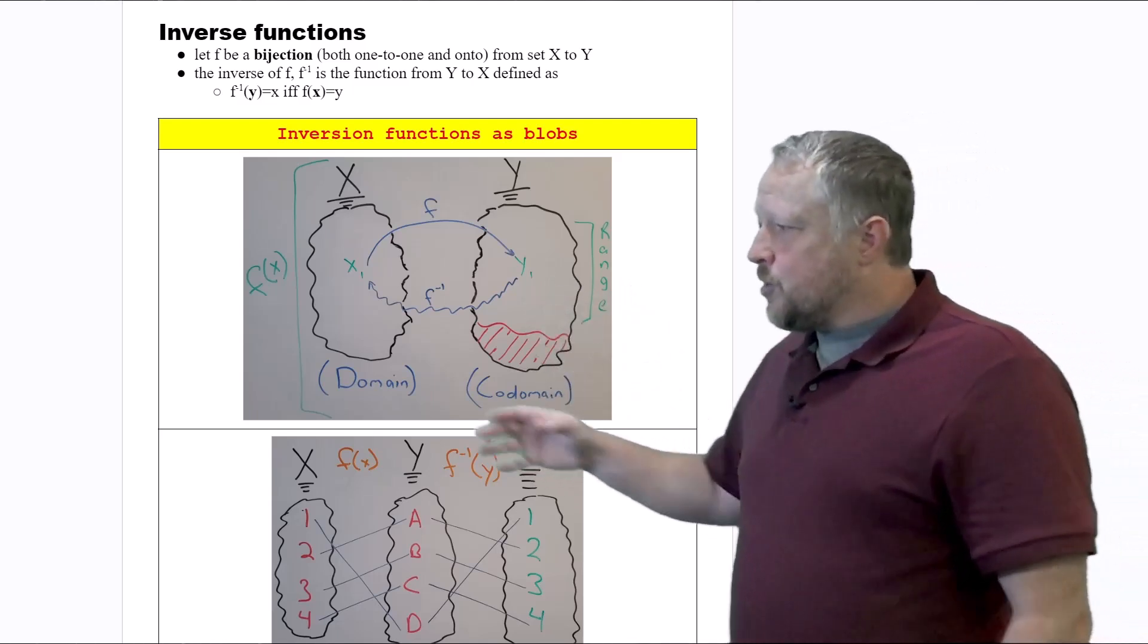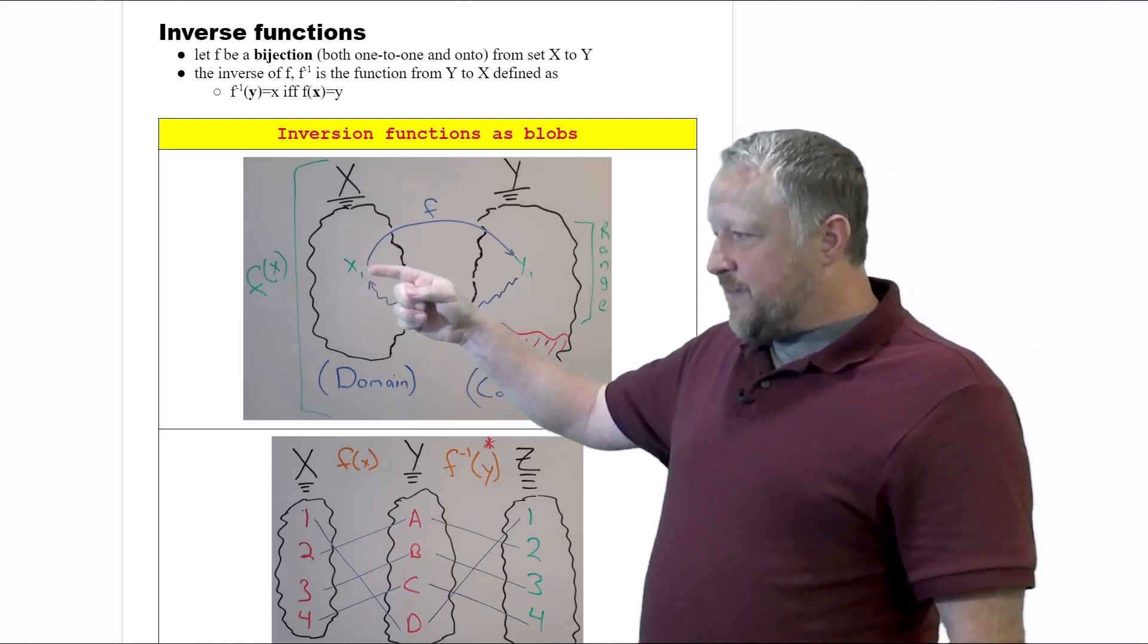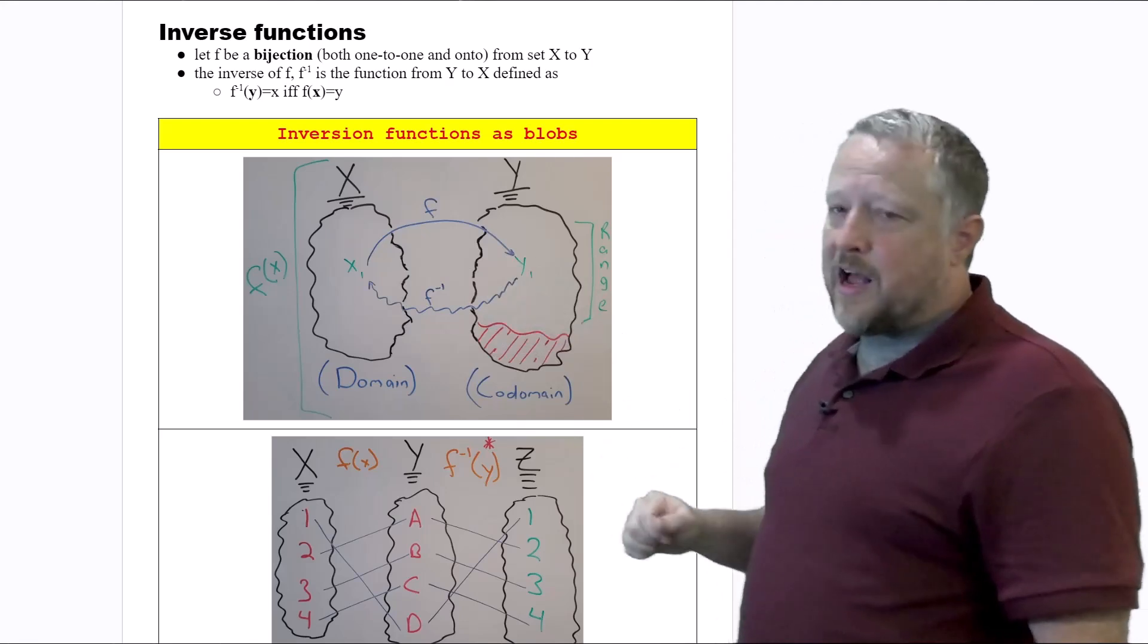So for an inverse, let me do it the other way. For a normal function, we're given a value of x, mapped it from using the function we're given to give us our value of y.